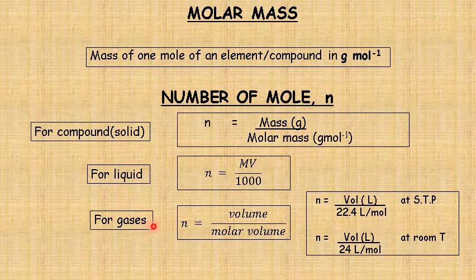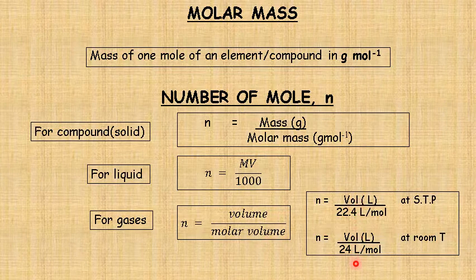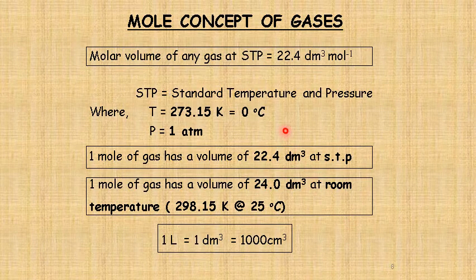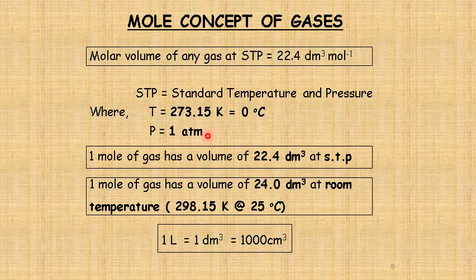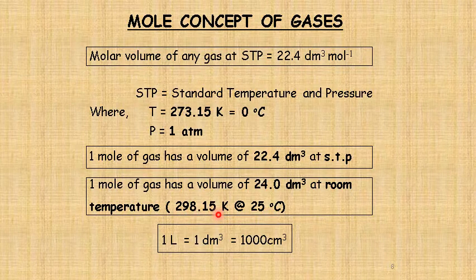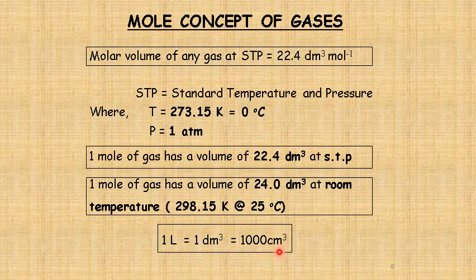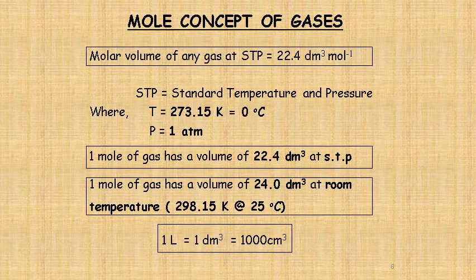For gas, there are two cases. One is STP and the other is room temperature — we use volume over molar volume. Depends on the condition: if STP, use 22.4 dm³; if room temperature, use 24.0 dm³. STP stands for standard temperature and pressure: temperature is 0°C or 273.15 K, and pressure is 1 atm. For room temperature, the temperature is 25°C or 298.15 K. Always remember the relationship: one liter equals 1000 mL and also equals 1000 cm³.